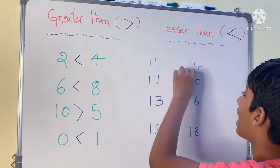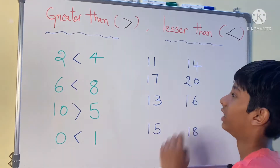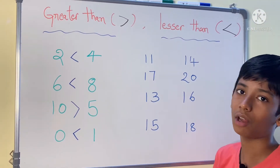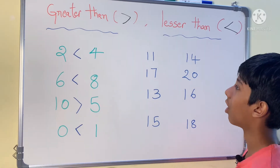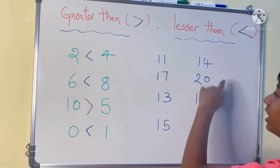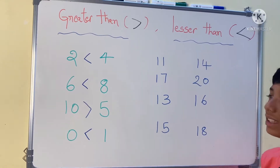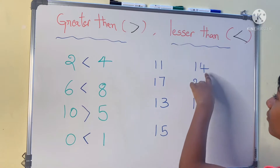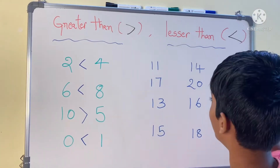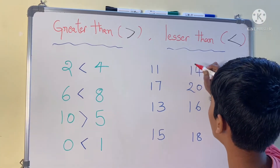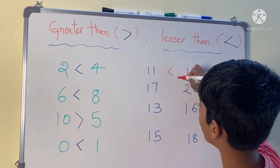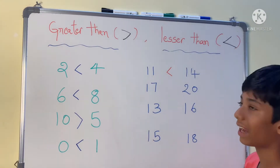So eleven and fourteen: which is big and which is small? Eleven is lesser than fourteen. Why? Because fourteen is big and eleven is small, so it is lesser than.